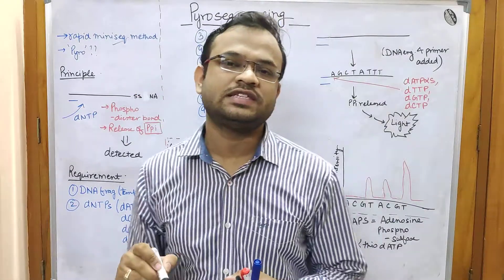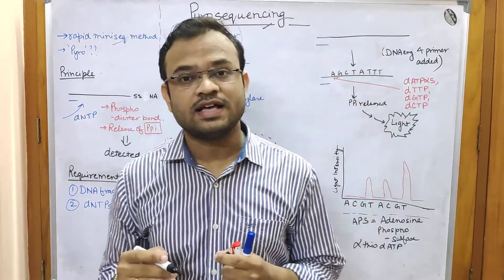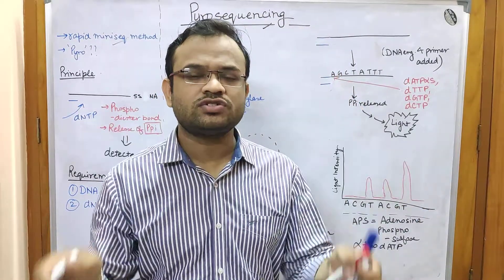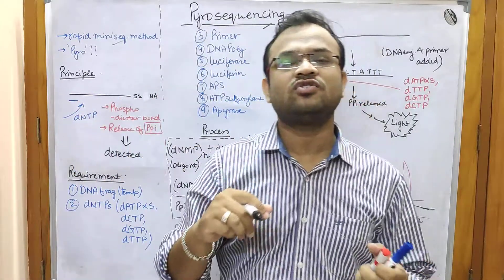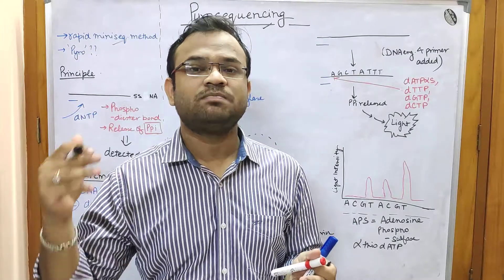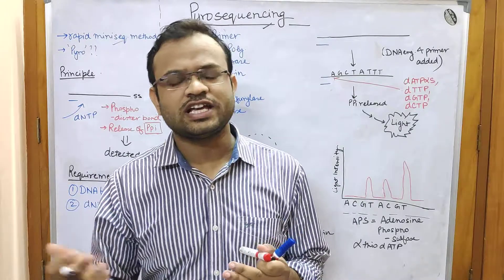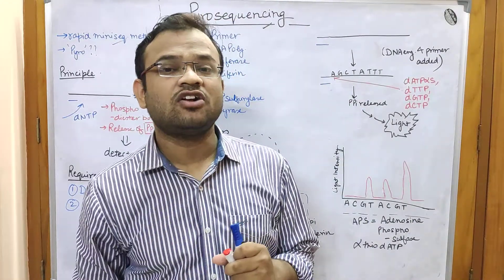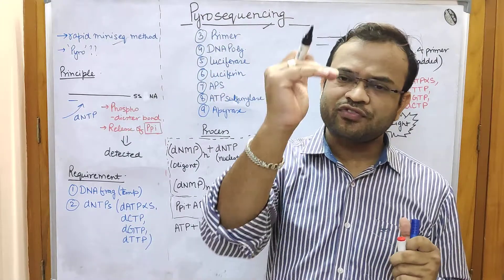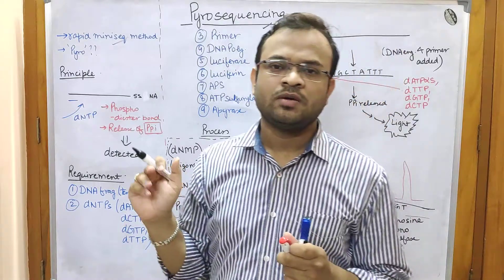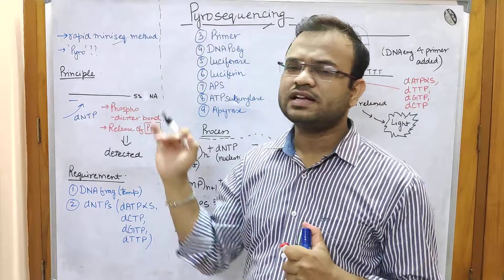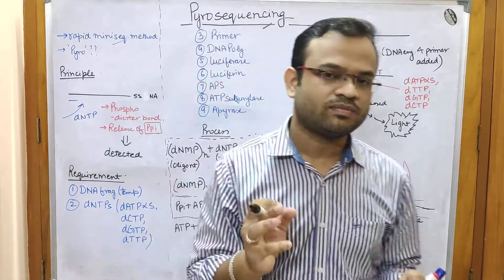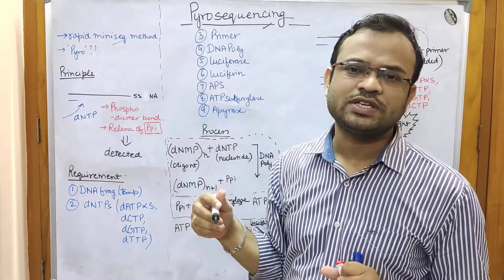Pyrosequencing is a rapid mini sequencing method. It is called mini sequencing because you do not need an agarose gel — you do not need to run your fragments on agarose gel to identify which base is present. If you recall the previous lectures on Maxim-Gilbert and Sanger sequencing, we had to run fragments in gel electrophoresis and then identify which base is present in what sequence. Pyrosequencing is different: it identifies the base by itself without running a gel.